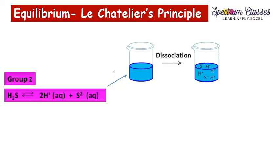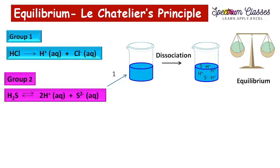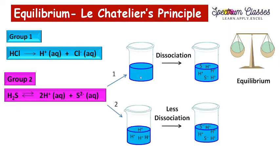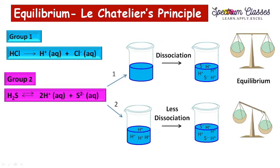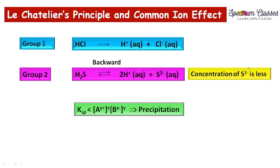Now I am showing how H2S works in the presence of already-added HCl. If no common ion is present, H2S dissociates normally in equilibrium. But when HCl has already been added to the Group 1 solution and we add H2S for Group 2, H⁺ ions are already present. Because of these H⁺ ions, H2S dissociates less, and to re-establish equilibrium the reaction goes in the backward direction.